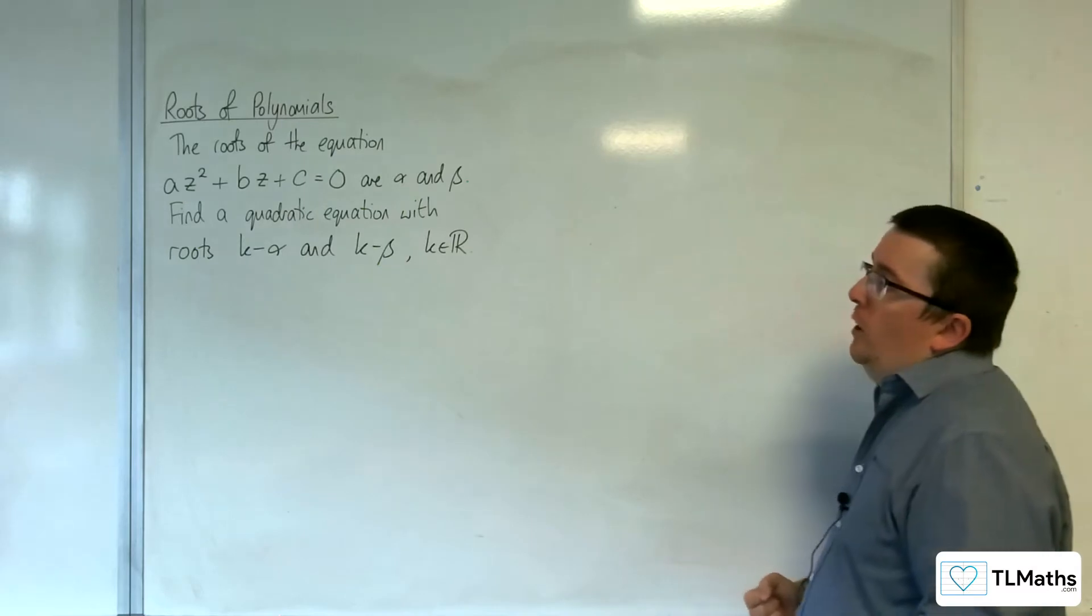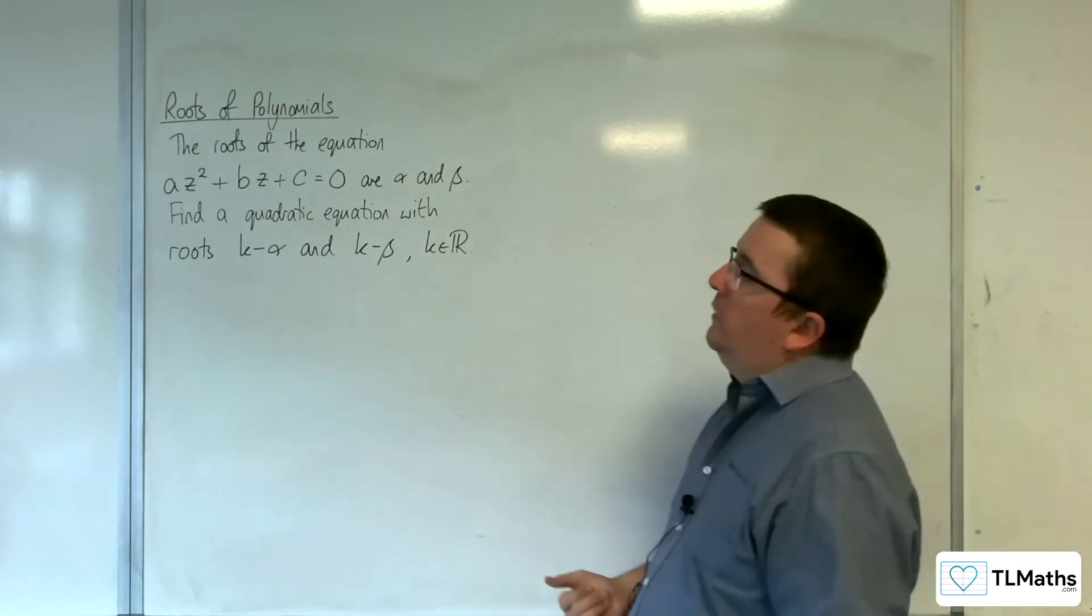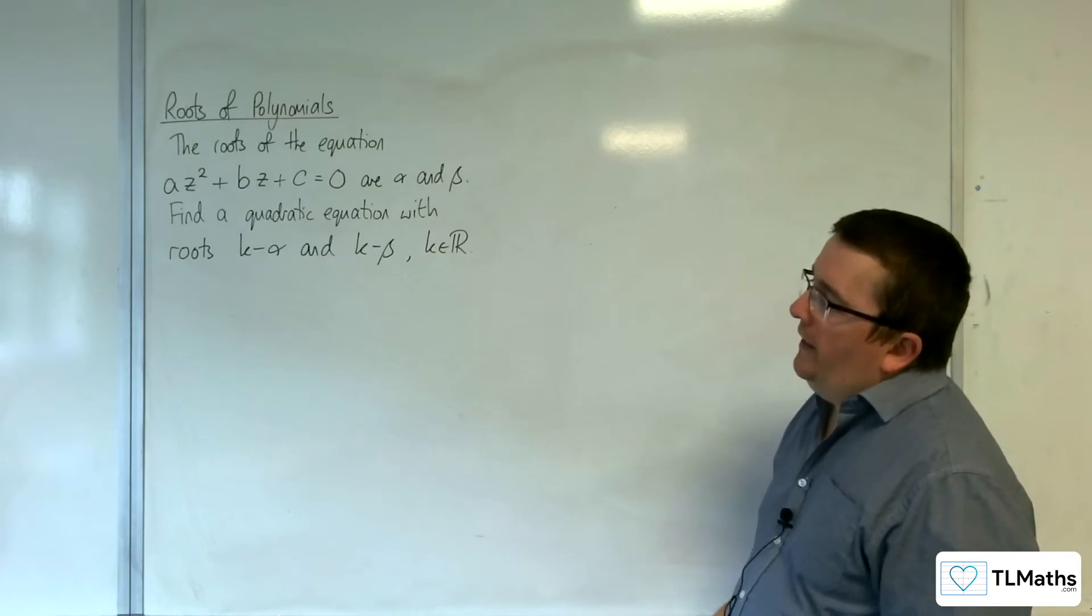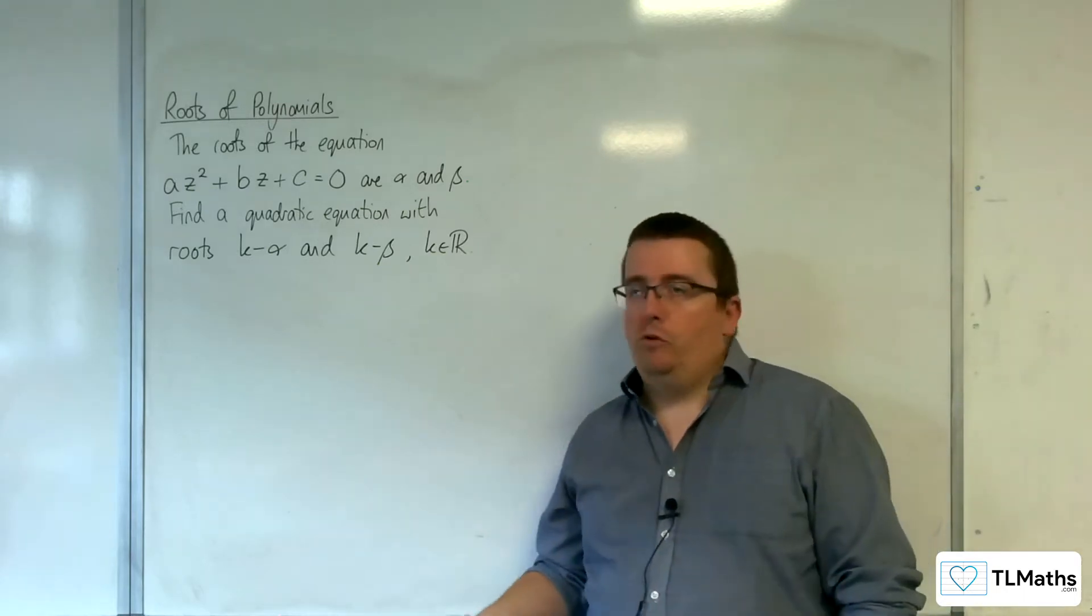In this video, the roots of the equation az squared plus bz plus c equals 0 are alpha and beta. Find a quadratic equation with roots k take away alpha and k take away beta, where k belongs to the real numbers.